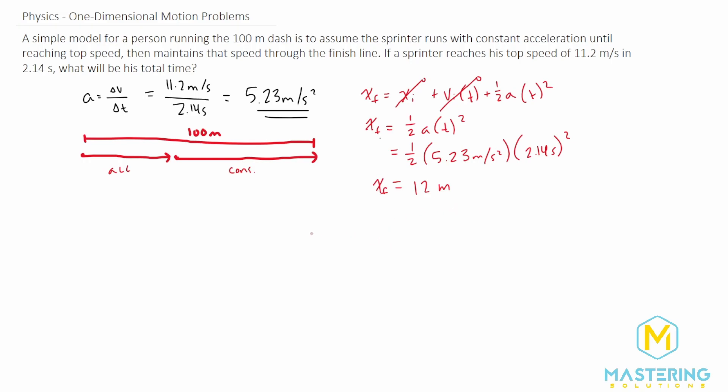For the second part, we know it's a 100 meter dash and we subtract 12 meters. So the rest of the section is 88 meters at constant velocity.